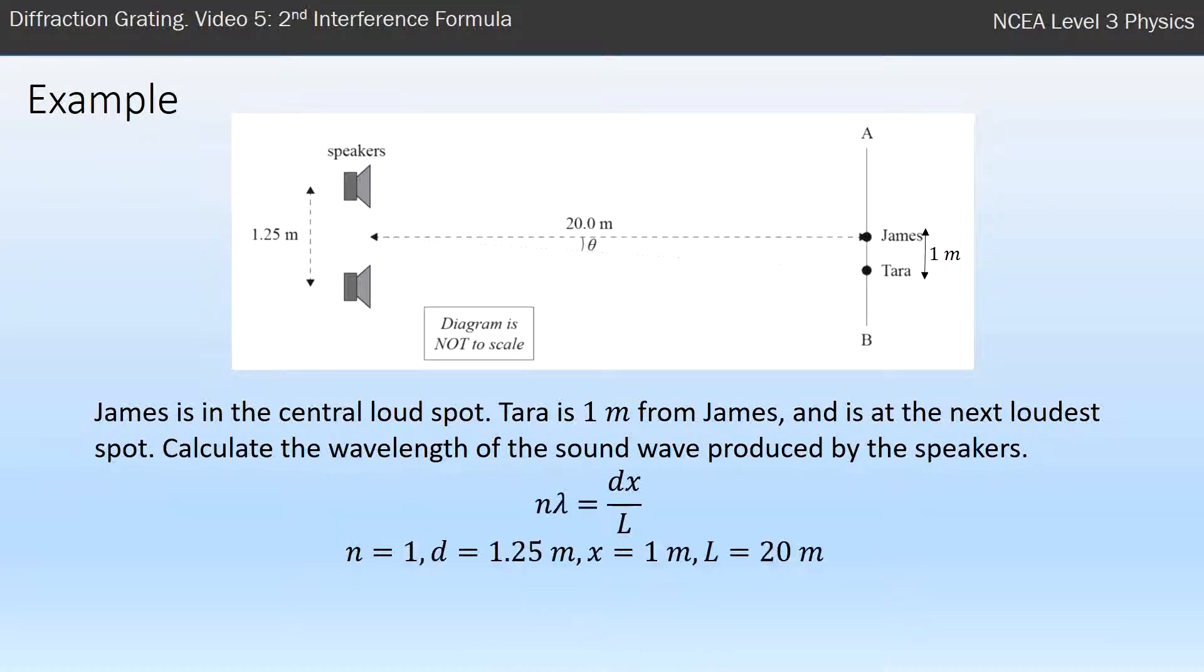Now that I can use this formula, I'll happily put my numbers in. D is the distance between slits, which is in this case the distance between speakers. X is a meter, L is 20. Throw everything together and I get a wavelength of 0.06 meters, so about 6 centimeters.